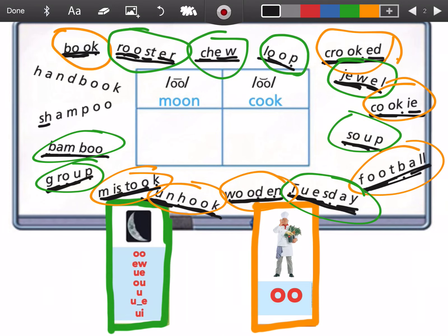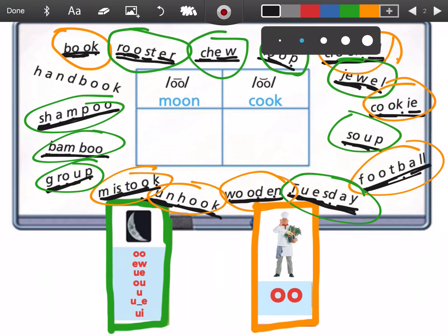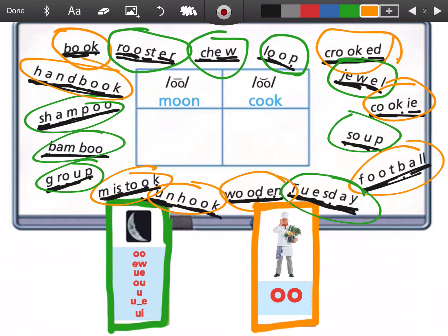Sh. Sh. Sha. M. Shamp. P. U. Shampoo. Shampoo. Shampoo. Uh is correct. Nice work. Cook says uh. Moon says ooh. Nice work everybody.